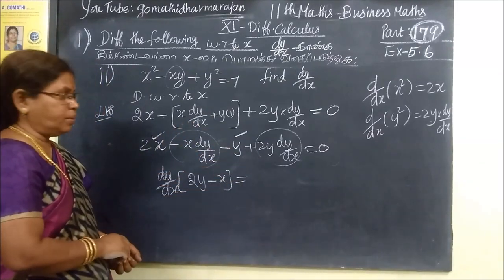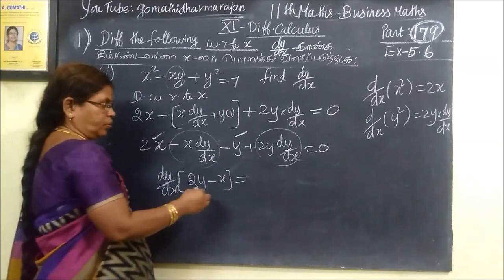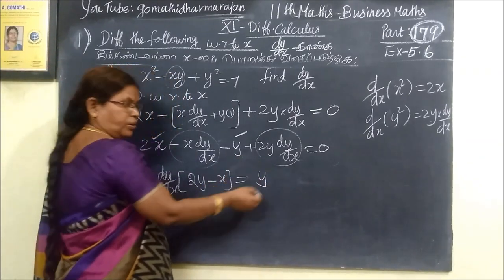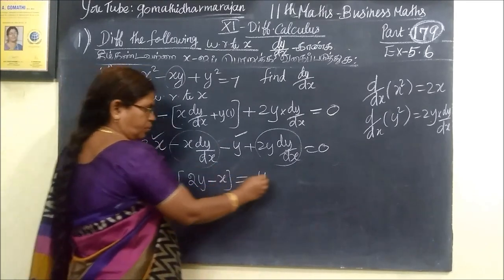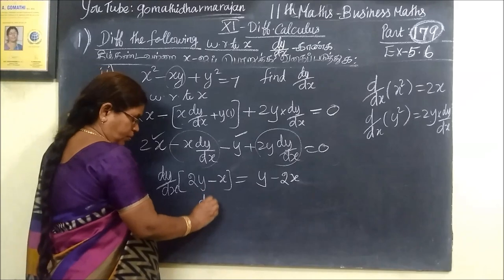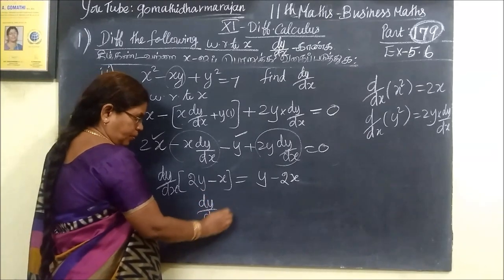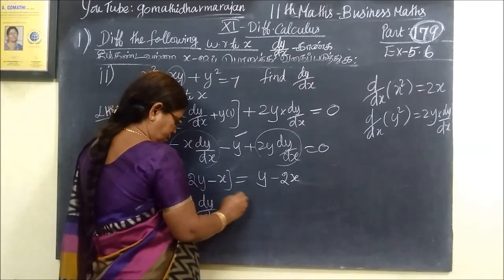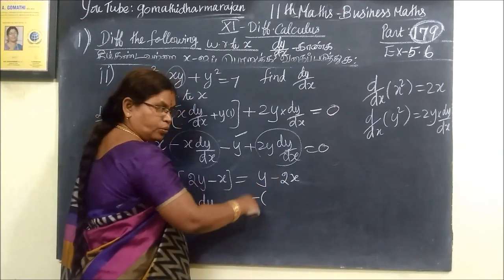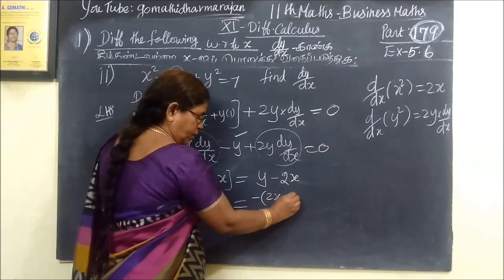dy/dx, you take the remaining terms. Plus y is equal to - sorry, minus is in this side. Plus y, plus 2x is in this side, minus 2x. So dy/dx is in this side. That is equal to 2x minus y.